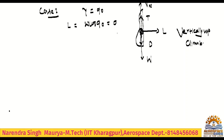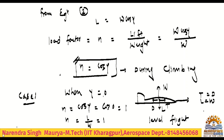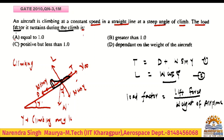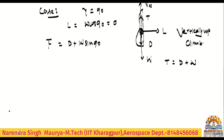This was actually a GATE question: for vertically up climb, what is the lift? It is W cos 90 equals zero. So the lift becomes zero. As per equilibrium, thrust equals drag plus W sin 90, and since sin 90 equals 1, thrust equals drag plus W.